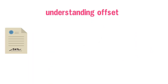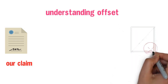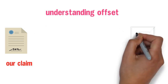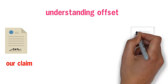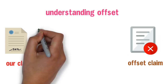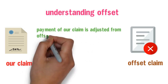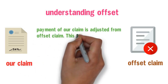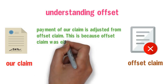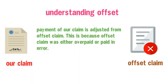This is the claim which we are working on. And this is the claim which was already processed and paid in error. Payment of our claim is adjusted from the offset claim. This is because the offset claim was either overpaid or paid in error.